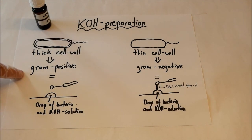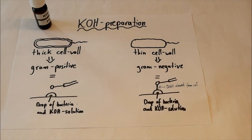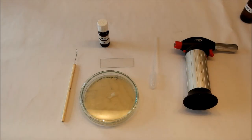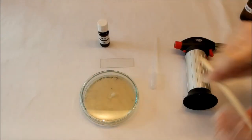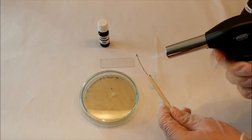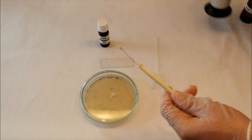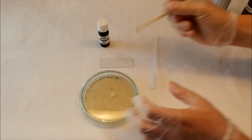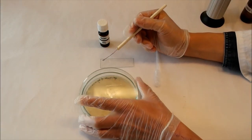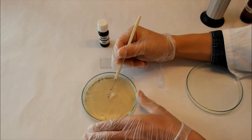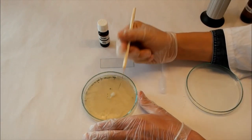So on gram negative bacteria, there will be thin lines of DNA between the loop and the drop. For this test, first you have to sterilize your inoculation loop, and then take a little amount of bacteria colony on your inoculation loop.